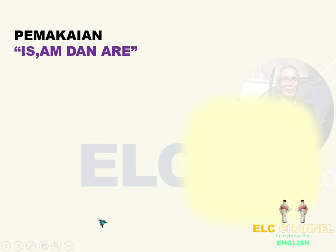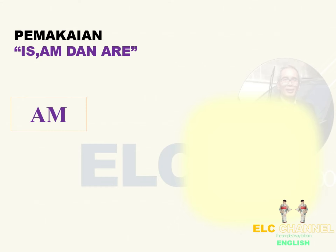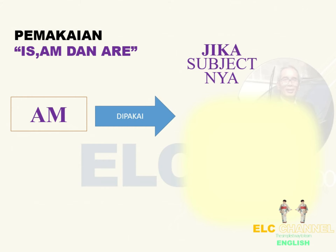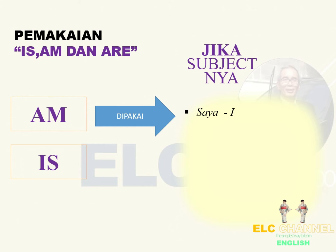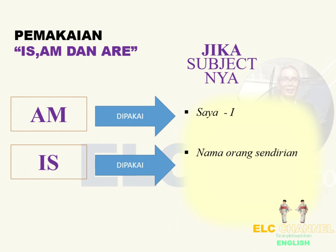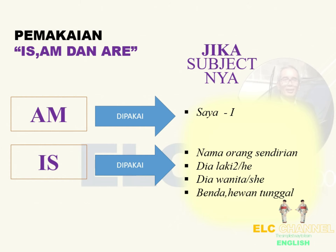Pemakaian is/am/are diatur sebagai berikut: am dipakai jika subjeknya I. Is dipakai jika subjeknya nama orang sendirian, dia laki-laki (he), dia wanita (she), benda atau hewan yang sendirian, benda yang tidak bisa dihitung.